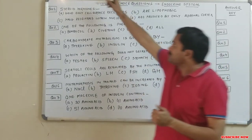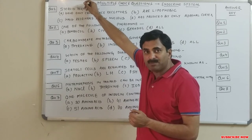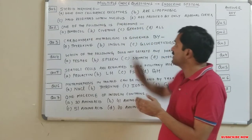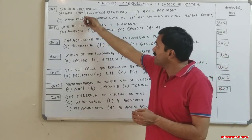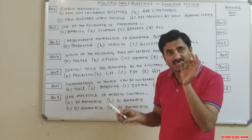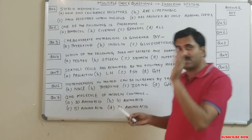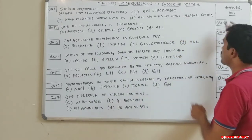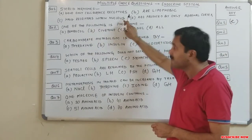Steroid hormones are of lipid nature, so their receptors will never be found on the cell surface — they are found within the nucleus. Therefore, the answer for the first question is C: steroid hormones have receptors within the nucleus.